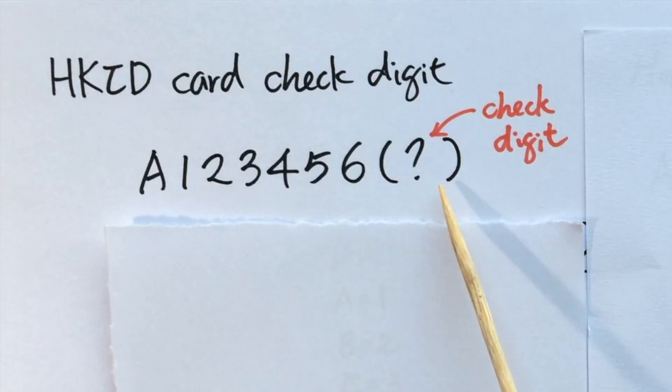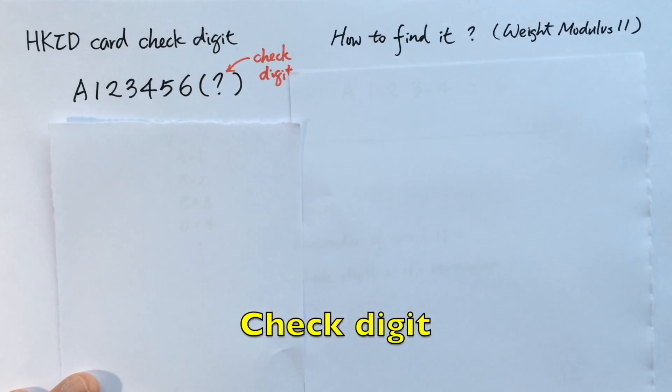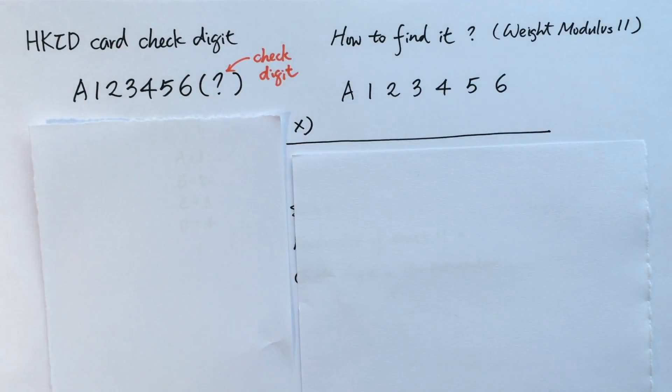At the end we have a bracket, and inside the bracket we should have a digit or a letter. We call this number or digit a check digit. Do you know how to find this check digit? We have a method called the weight modulus 11.